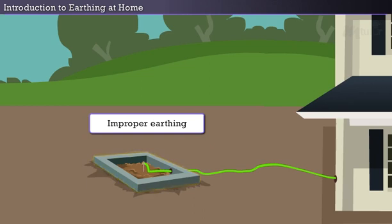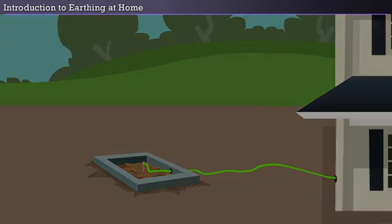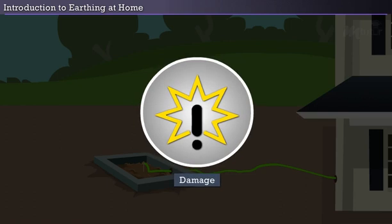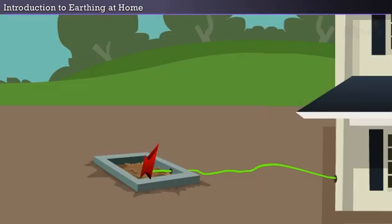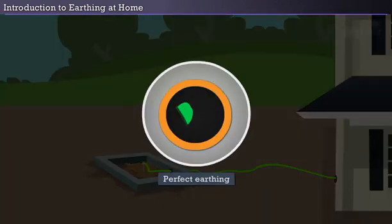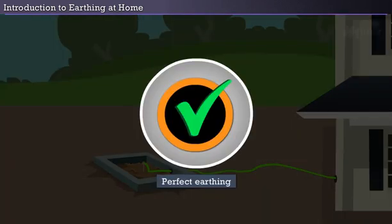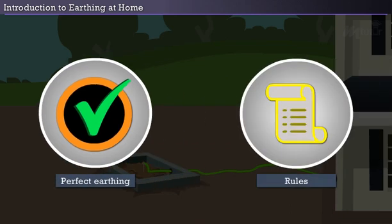If improper earthing could cost this much, then the absence of it would result in much more damage. So, if you do not have an electrical earthing in your home, then do it at once as damage can occur at any time. You can do a perfect earthing on your own if you follow the rules properly. Without further delay, let's get into work.